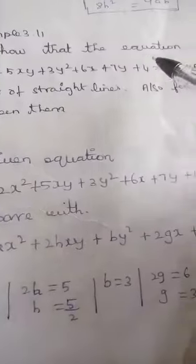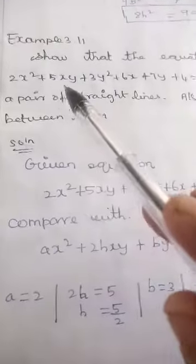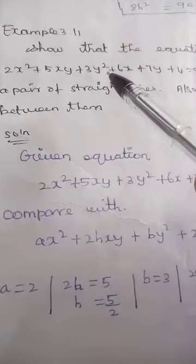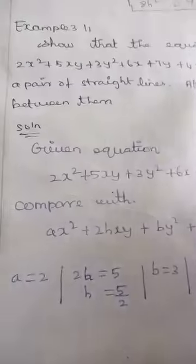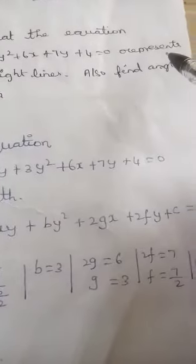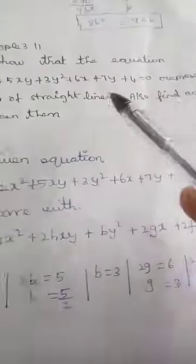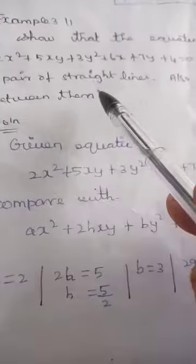Example 3.11. Show that the equation 2x² + 5xy + 3y² + 6x + 7y + 4 = 0 represents a pair of straight lines. Also find the angle between them.